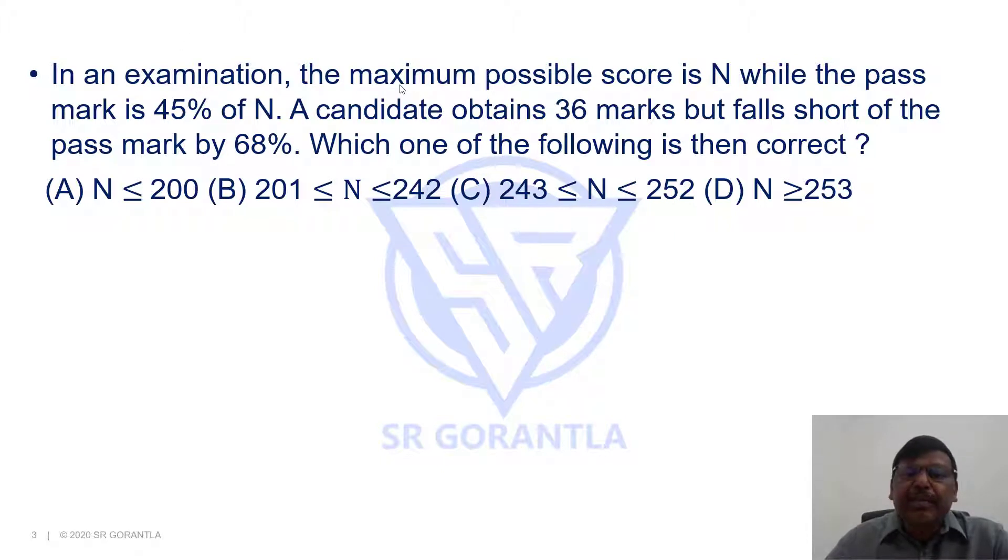In an examination, the maximum possible score is N while the pass mark is 45% of N. A candidate obtains 36 marks but falls short of the pass mark by 68%. Which one of the following is then correct?